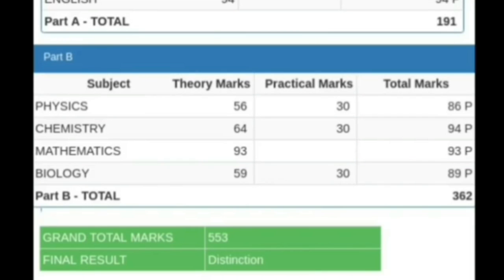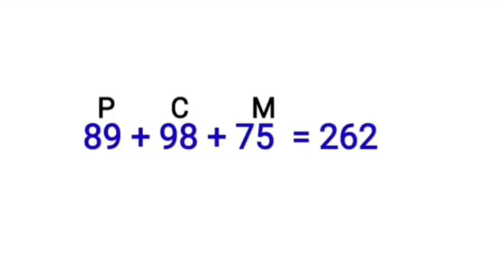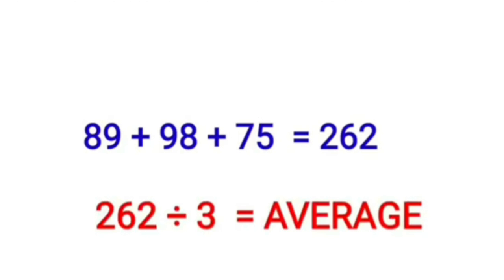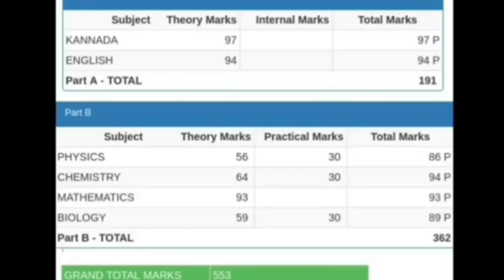So we are back to our example. We have to add these three subjects. Add 89 plus 98 plus 75, we get 262. Next step: this 262, you have to divide by 3. This average is used for calculating your KCET rank along with KCET mark. So this is very important. In the average above, in each subject 80 and above, almost your KCET rank is 50% done.